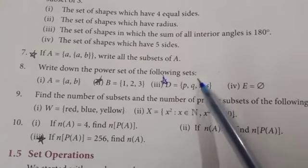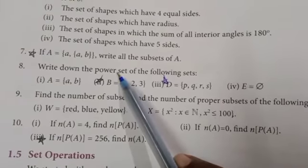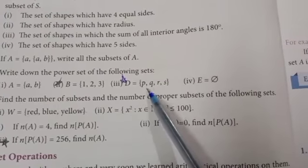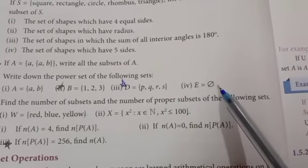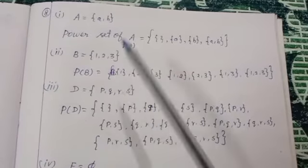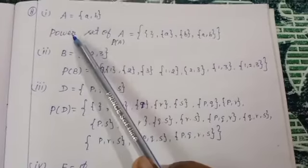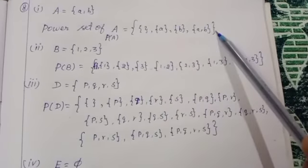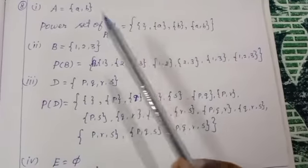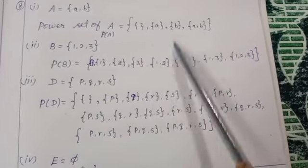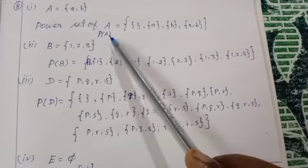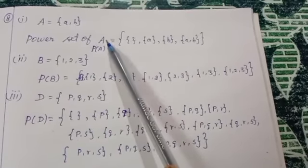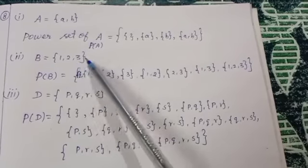Next, 8th question: write down the power set of the following sets. Power set means the set of all subsets. A is equal to {a, b}; B is equal to {1, 2, 3}; D is equal to {P, Q, R, S}; E is equal to empty set. Power set is denoted by P(A). For B, it is P(B) where B = {1, 2, 3} — here we have 3 elements.